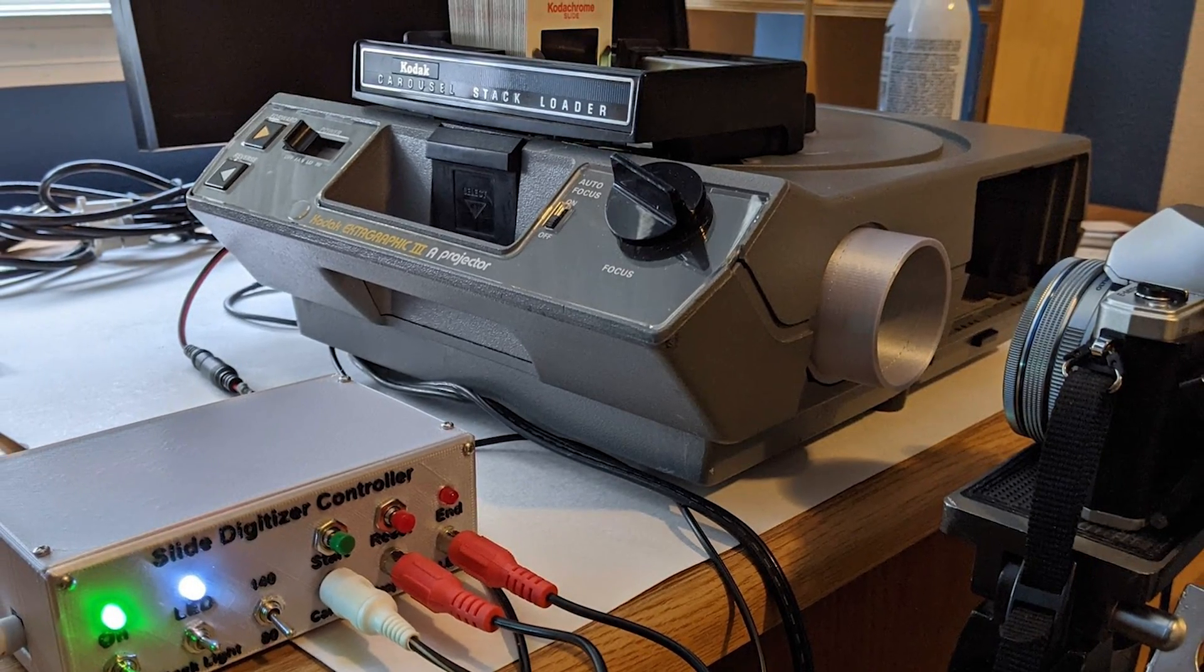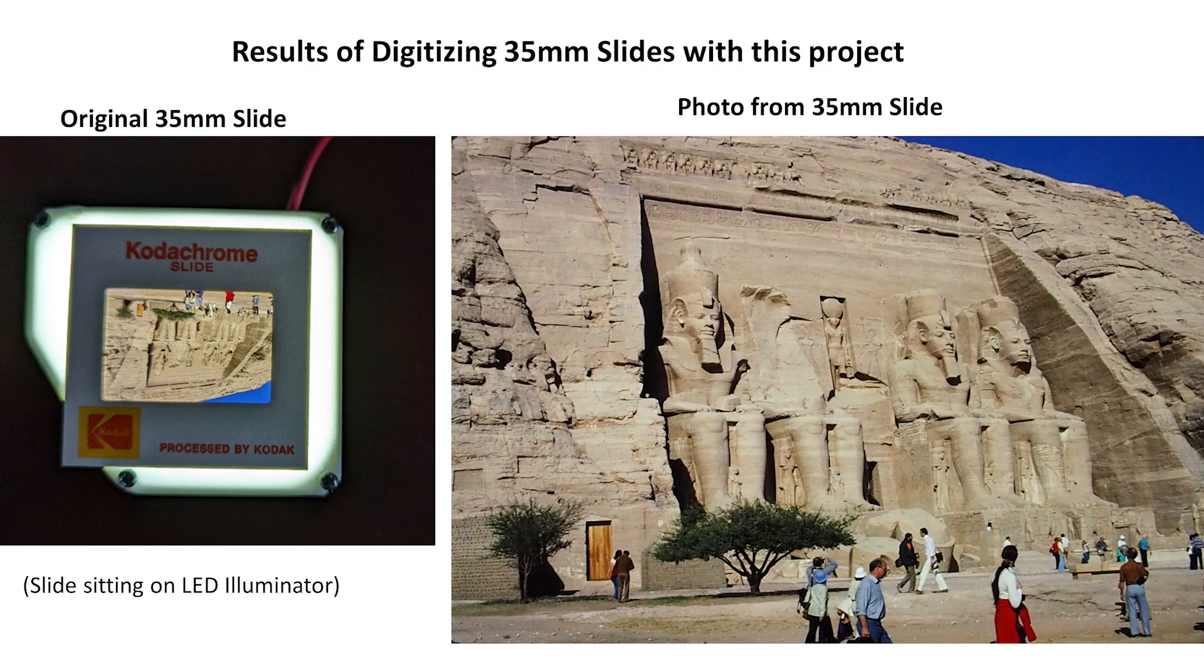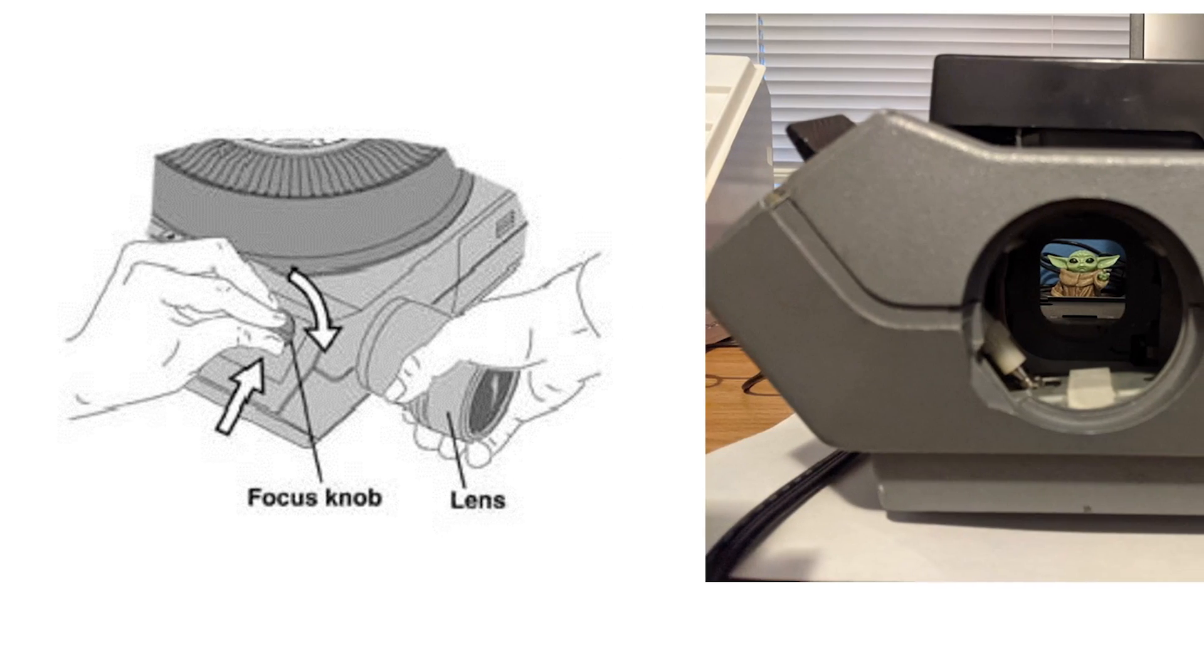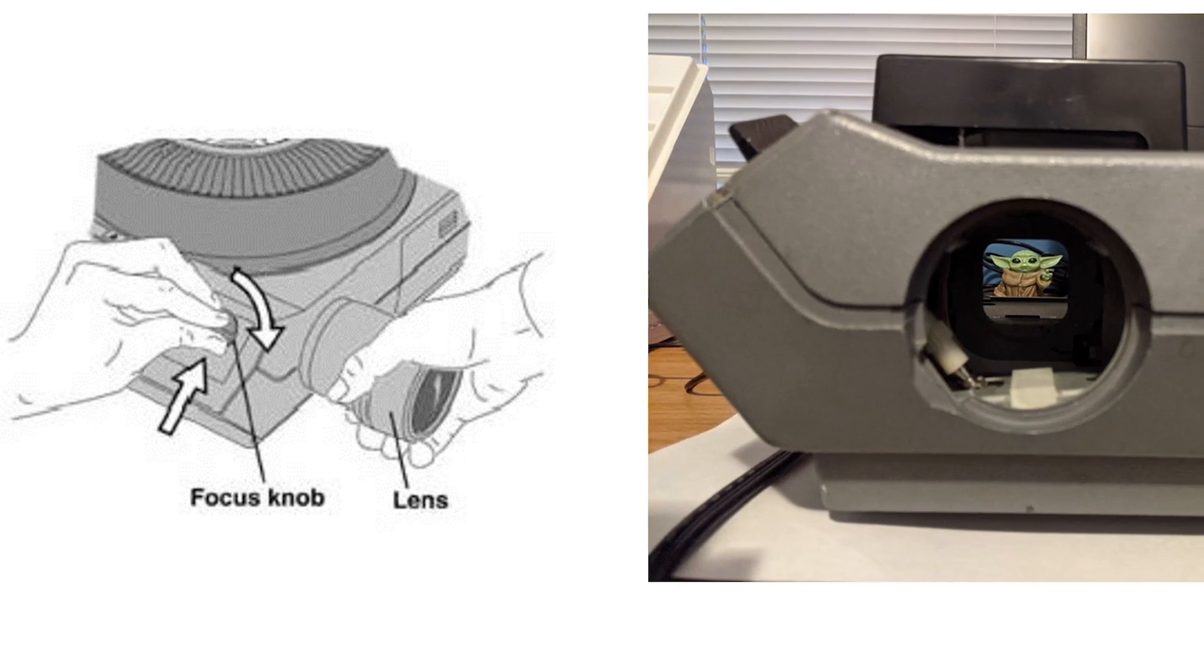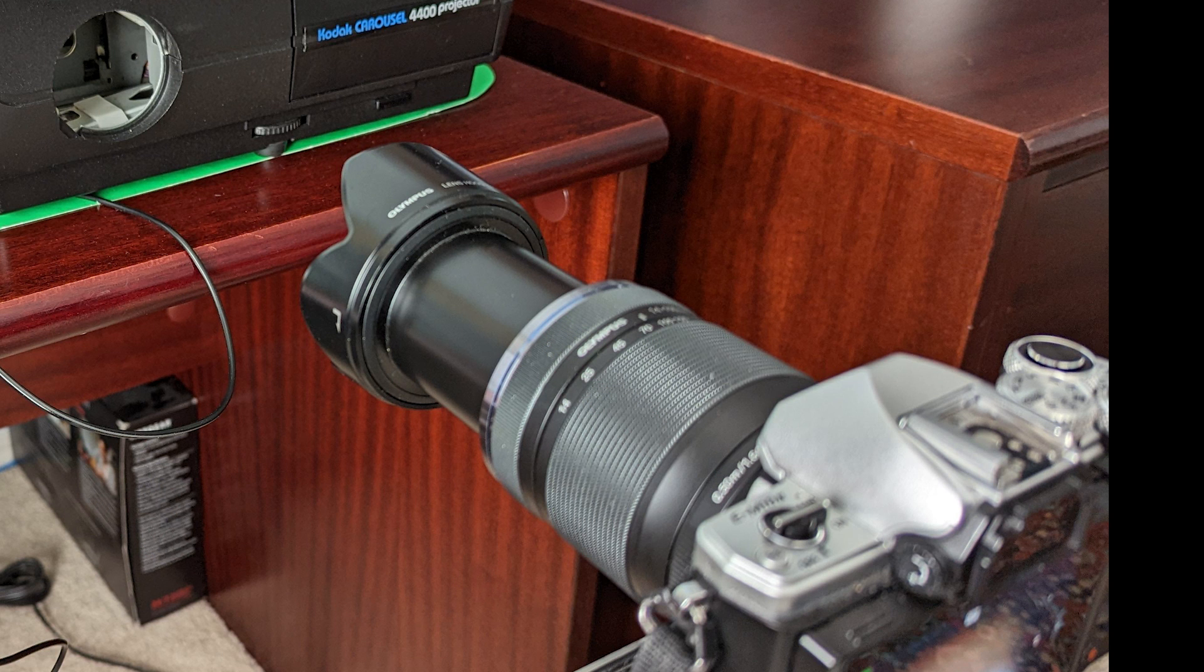Also on Instructables, I found this guide for an automated slide digitizer by RBWood53. This makes use of an old carousel style slide projector. You remove the lens and the projector lamp and replace them with this tiny 3D printed backlit projector screen. A digital camera then photographs the slide image projected onto the screen to digitize the image.